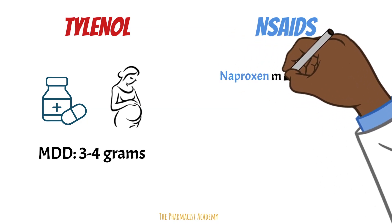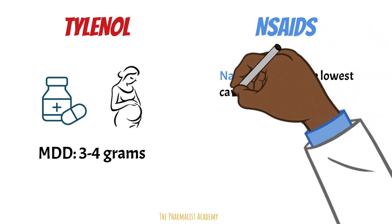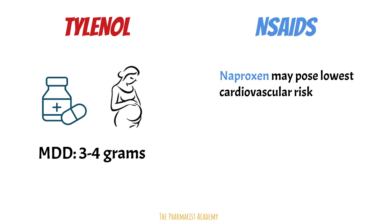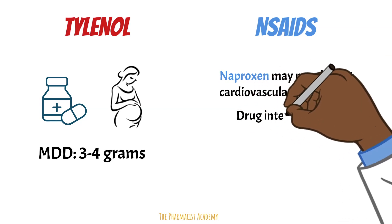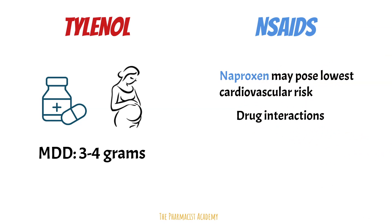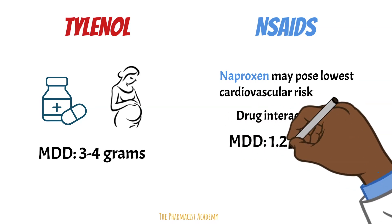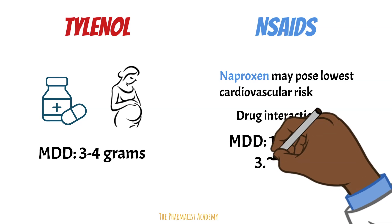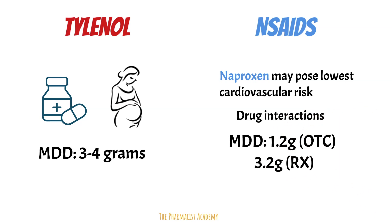Naproxen was observed to have the least risk among other NSAIDs for cardiovascular-related events and death. NSAIDs can also interact with a lot of drugs that are renally cleared because of their ability to reduce blood flow to the kidneys — a good example is the interaction with lithium. The maximum daily dose for NSAIDs is 1.2 grams over-the-counter and 3.2 grams by prescription.